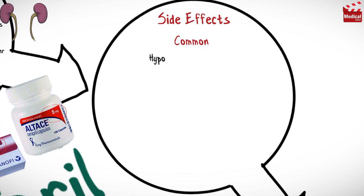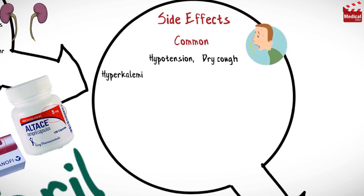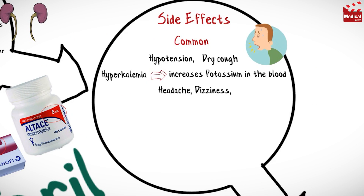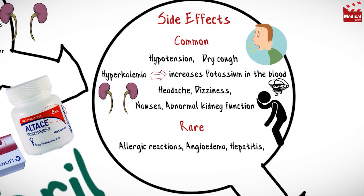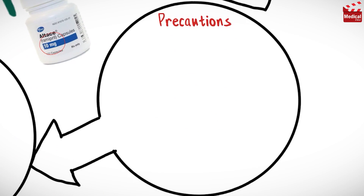Remipril may cause hypotension, dry cough, hyperkalemia (increased potassium in the blood), headache, dizziness, nausea, and abnormal kidney function. It may rarely cause allergic reactions, angioedema, hepatitis, neutropenia, and agranulocytosis.